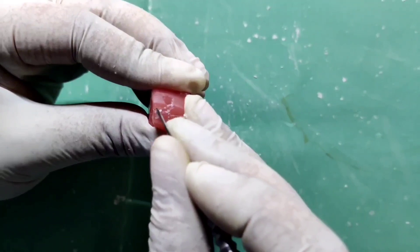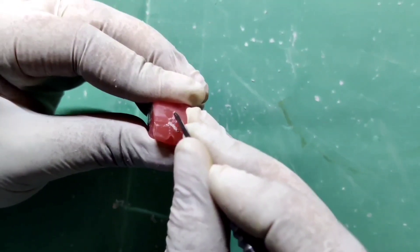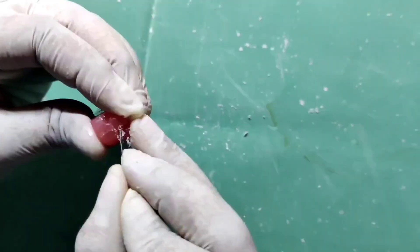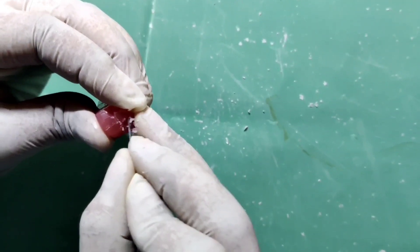Start making the distolingual cusp. Make semicircular groove and make the cusp slopes on either side. Distolingual is the smallest of all the cusps.